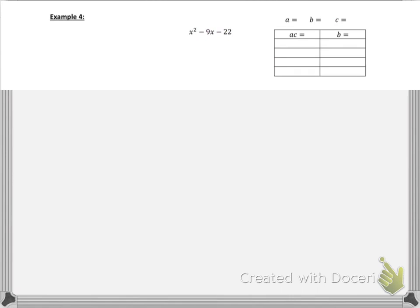Okay, so this time, I'm going to fill in my a, b, and c. So a is 1, b is negative 9, and c is negative 22. So ac is negative 22, and b is negative 9.